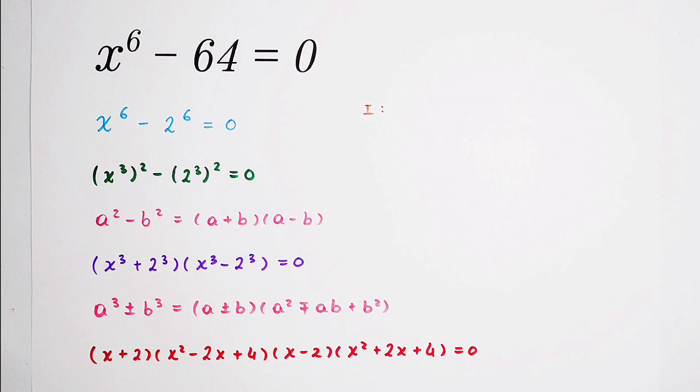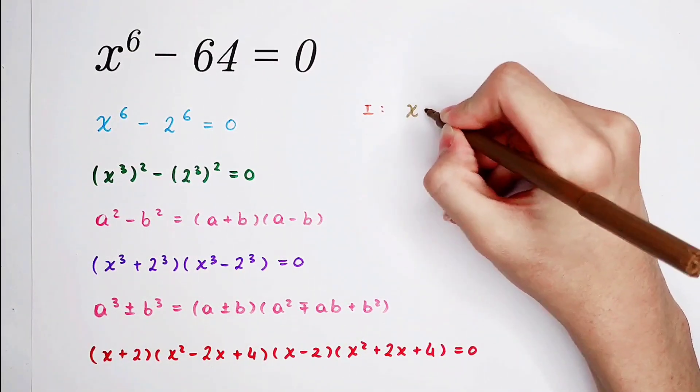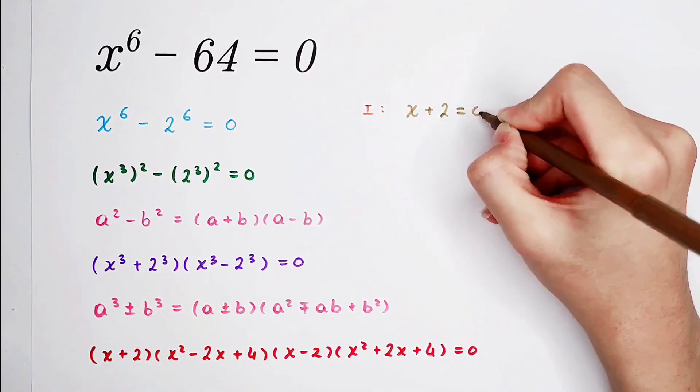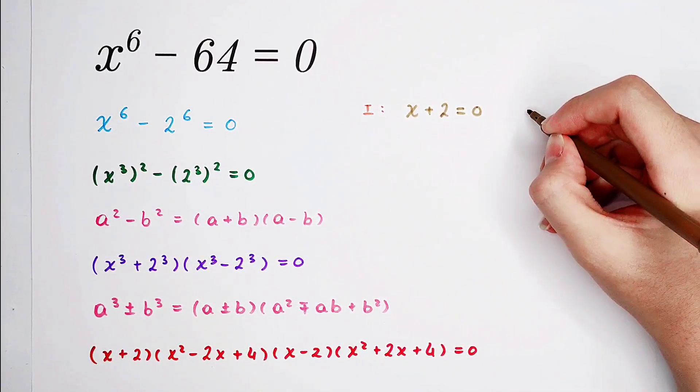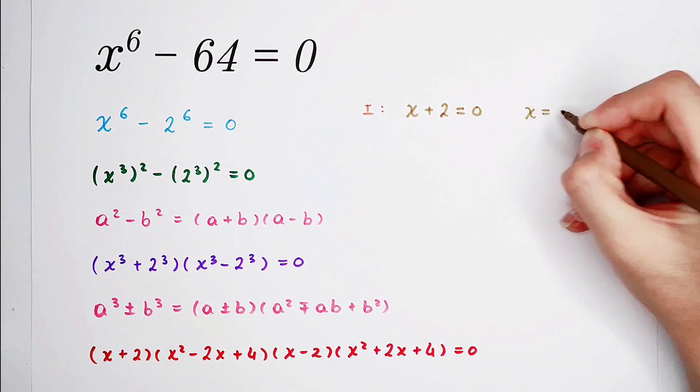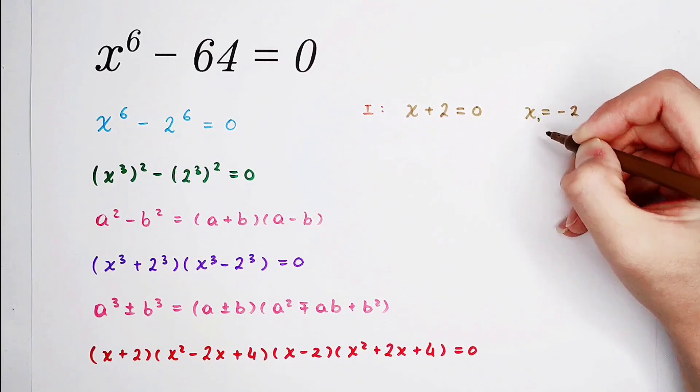For our first case, we have x plus 2 equals 0. Here we get x is equal to negative 2. So x1 is negative 2.